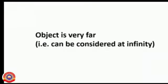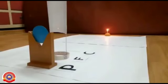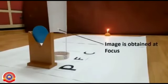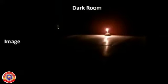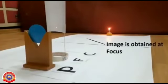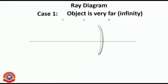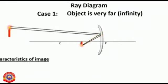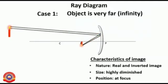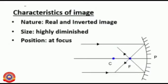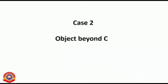Number one: if the object is placed at infinity, where does the image form? The image is formed at F. The ray diagram shows a real, inverted, and diminished image formed at F.